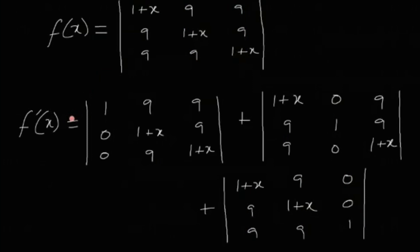In general, for an n×n determinant, differentiating produces a sum of n determinants, where in each one a different column is differentiated and the rest remain unchanged. Here we have a 3×3 determinant, so f'(x) is a sum of exactly three determinants.